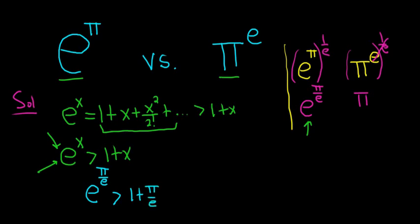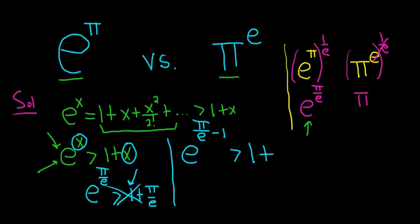However, this does not seem to be the best case scenario because we have a 1 here. So it would be really nice to get rid of the 1. What we can do instead is look at e^(π/e - 1), right? And so now we replace each copy of x with π/e - 1. So this is 1 + (π/e - 1).